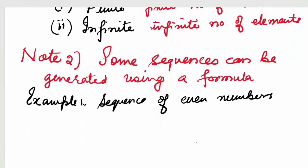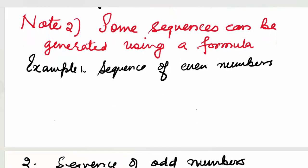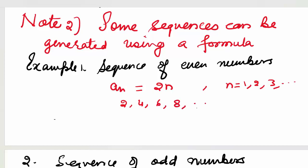Now, that was the first note. Some sequences can be generated using a formula. Let's take the sequence of even numbers. Even numbers can be generated using the formula a_n = 2n. You take n = 1, 2, 3 and you get the sequence of even numbers: 2, 4, 6, 8. Put n = 1, you get 2; put n = 2, you get 4. So the sequence of even numbers can be generated using the formula a_n = 2n.